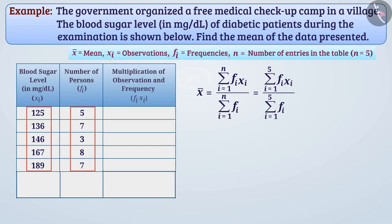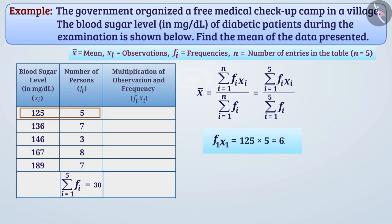Here the sum of the frequency of observations is 30, which means that a total of 30 diabetic patients were tested for blood sugar level. Now for each observation, we will find fi·xi. For the first observation, f₁·x₁ equals 125 multiplied by 5, which equals 625.